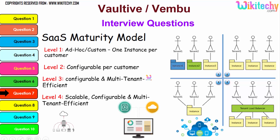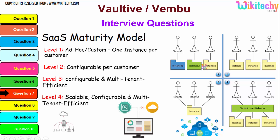You are able to see level one here — one instance per customer. Level two is configurable per customer. Level three is configurable with multi-tenant architecture — here you have a load balancer and scalable, configurable multi-tenant setup. This is your cloud computing network environment.